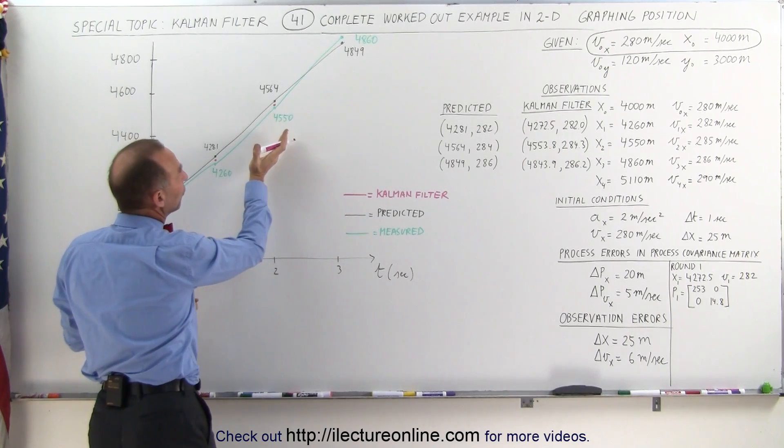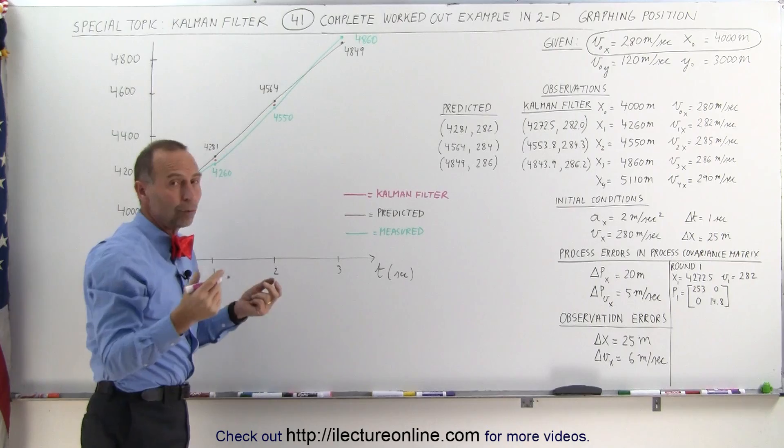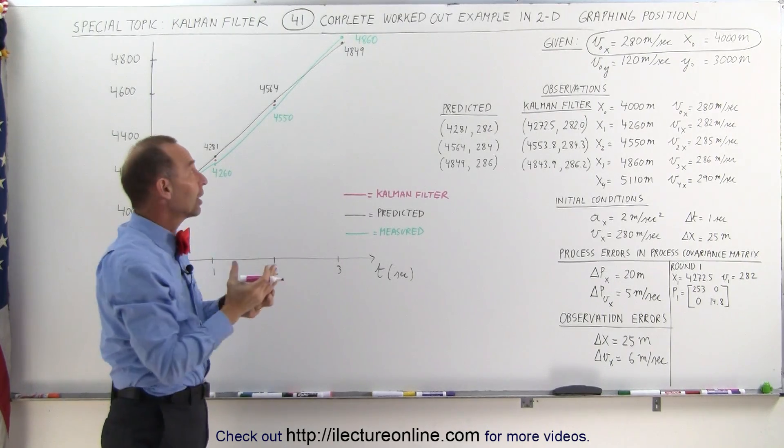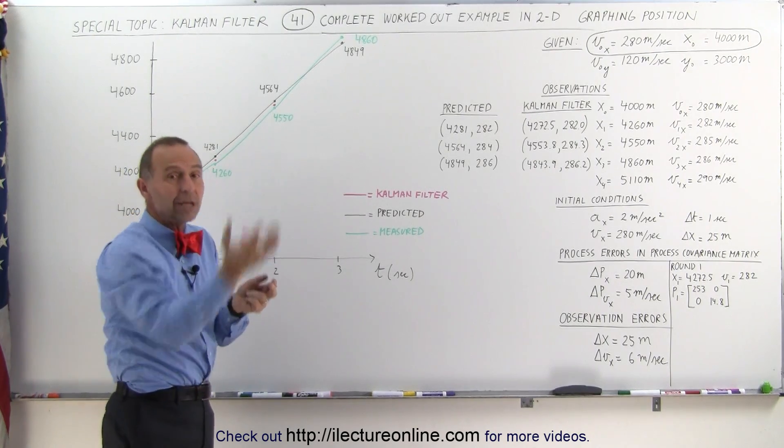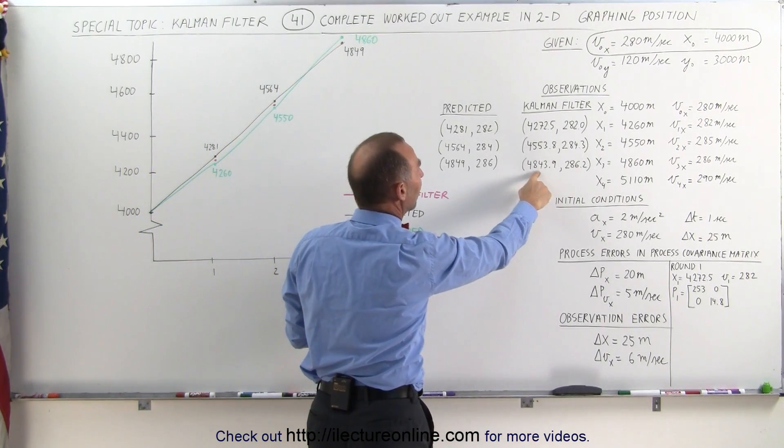And then you see a very erratic change in the measured value. And so normally, if you were only looking at the measured values, you'd be really pulled off. But the Kalman filter moderates that and says, no, I don't think you're quite that far off.